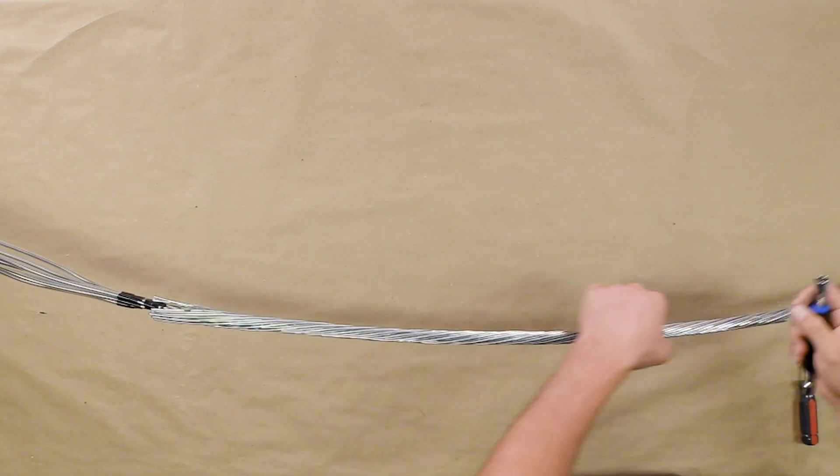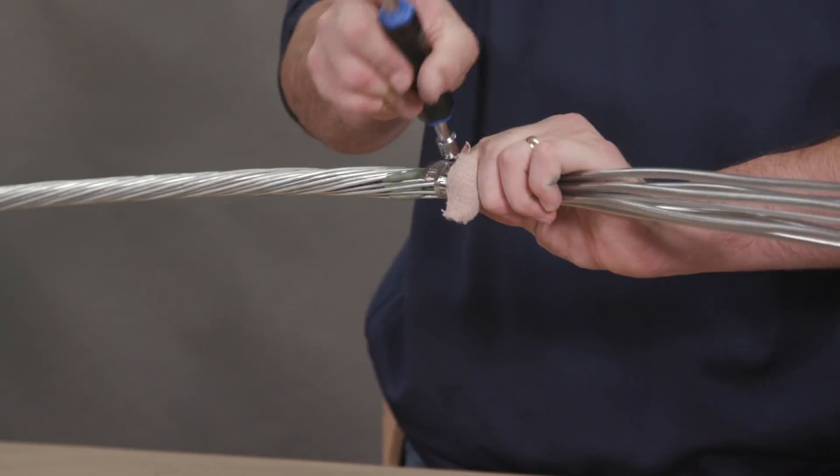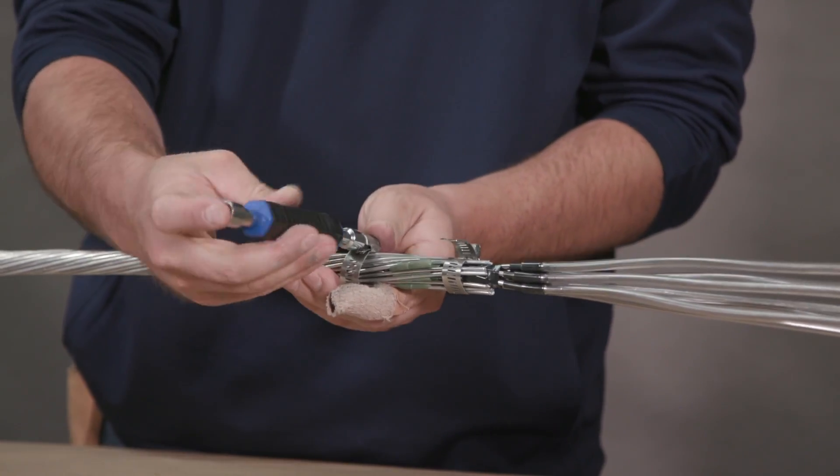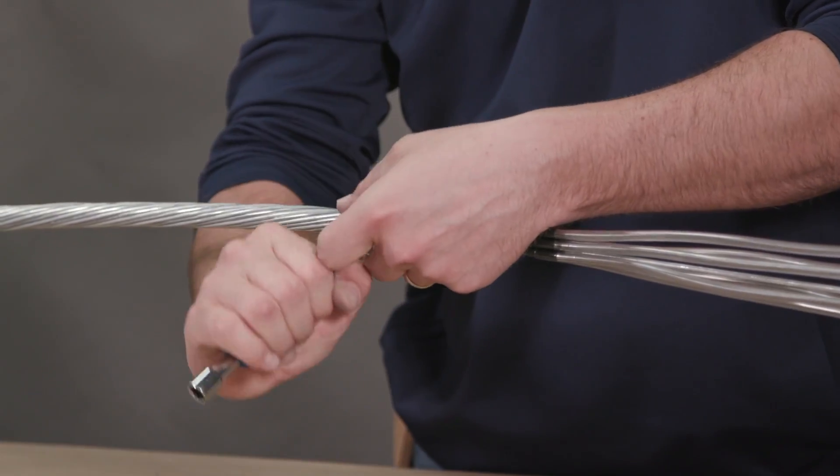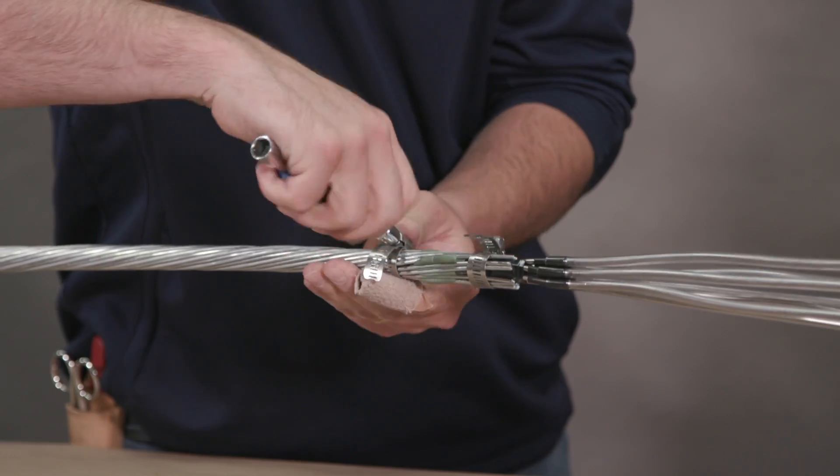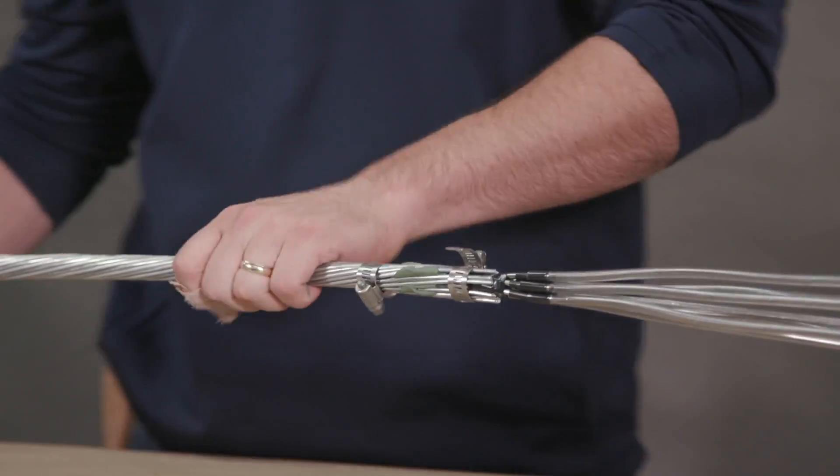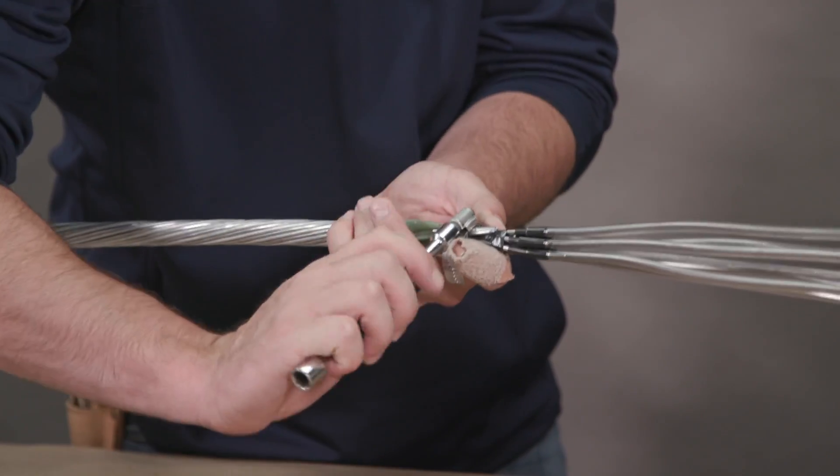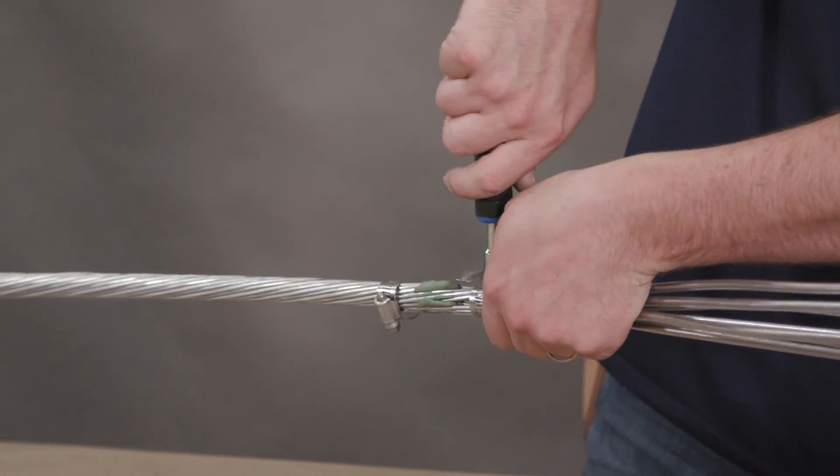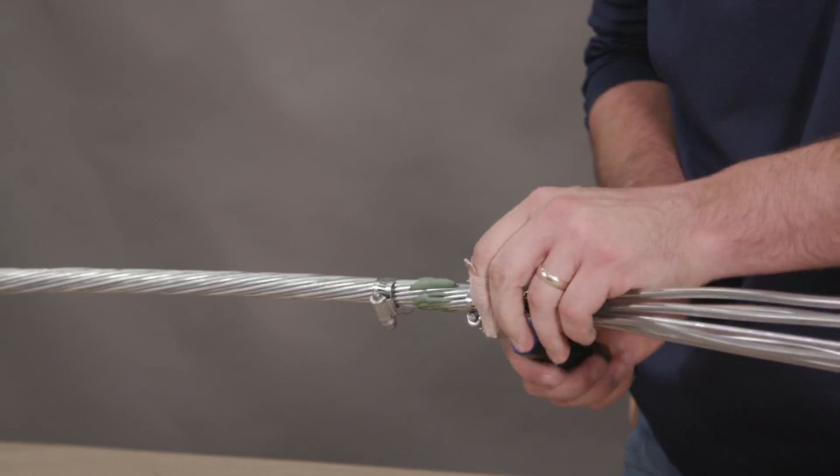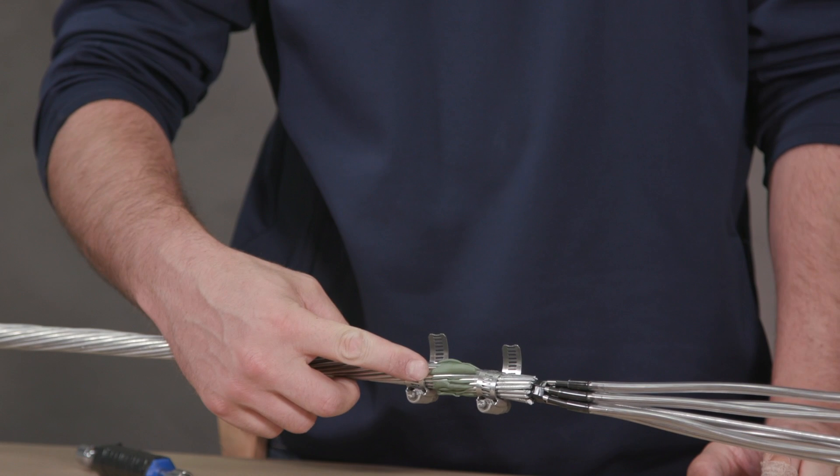Place one hose clamp on either side of the green sealant on the outer layer. Alternating back and forth, evenly tighten the hose clamps down until the outer layer is completely seated. Confirm that the green sealant is in between each strand of the outer layer.